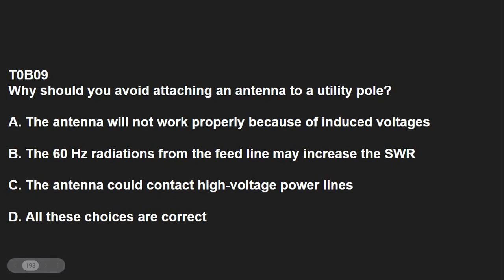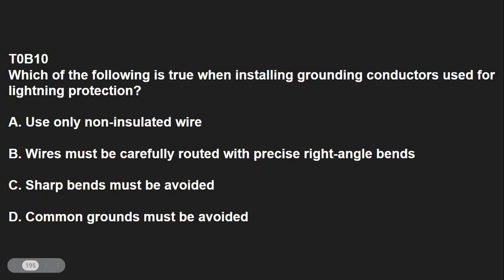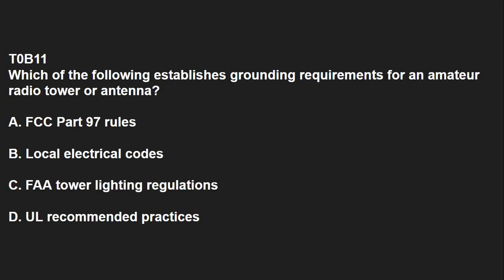T0B09: Why should you avoid attaching an antenna to a utility pole? The antenna could contact high-voltage power lines. T0B10: Which of the following is true when installing grounding conductors used for lightning protection? Sharp bends must be avoided. T0B11: Which of the following establishes grounding requirements for an amateur radio tower or antenna? That would be local electrical codes.